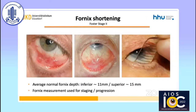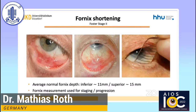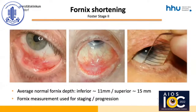In stage 2, the sub-epithelial fibrosis leads to a shortening of the fornices, as you can see on the left image. The normal depth of the inferior fornix is approximately 11 mm and 15 mm for the superior fornix. The fornix depth should regularly be measured in all MMP patients, as it can be used to measure disease progression and used for staging.